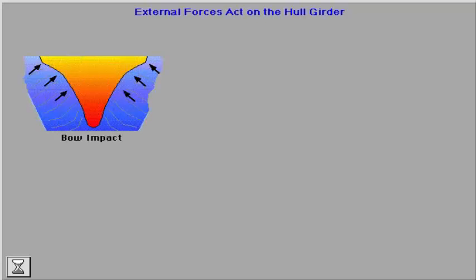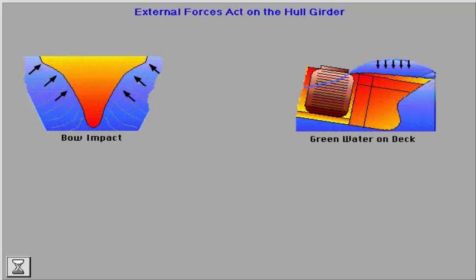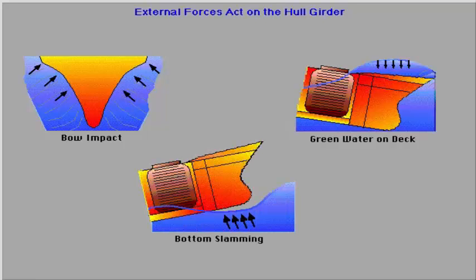Assessing local sea forces from the bridge is difficult. The basis for decisions on appropriate speed and course are factors such as bow impact, green water on deck, and bottom slamming. Exercising proper judgement does not prevent some structural elements from being more exposed to sea forces than others, making damages more probable in certain areas.